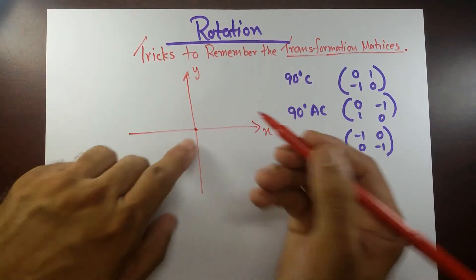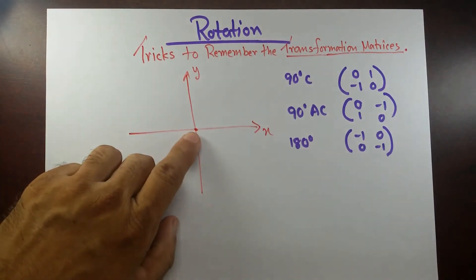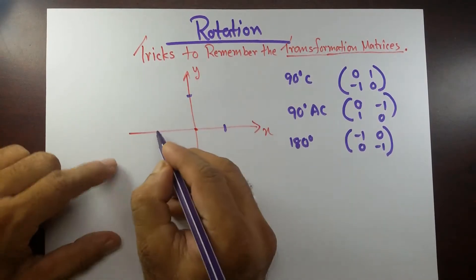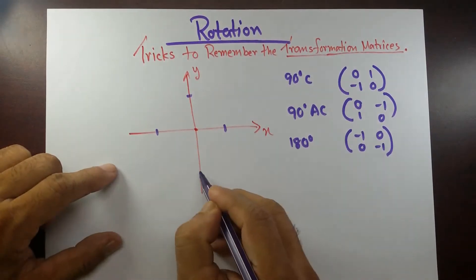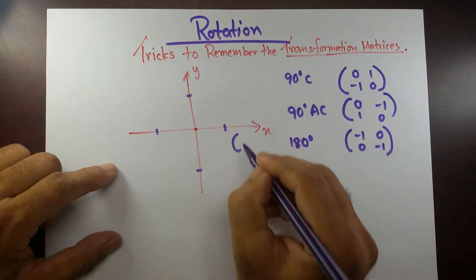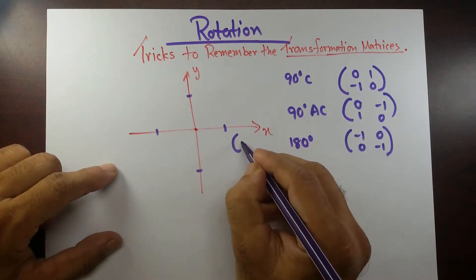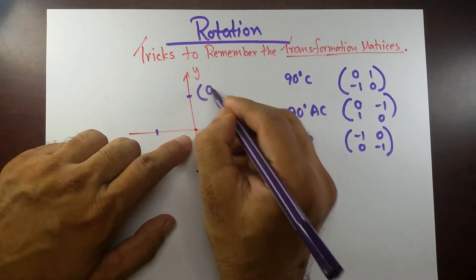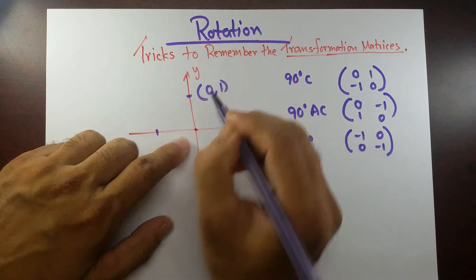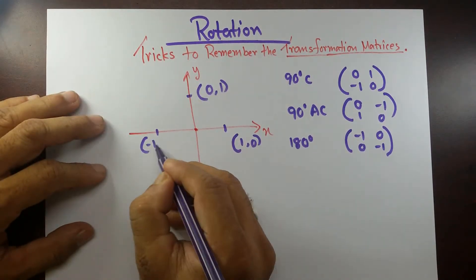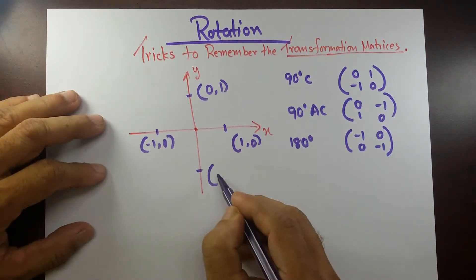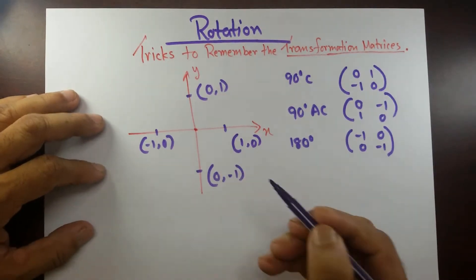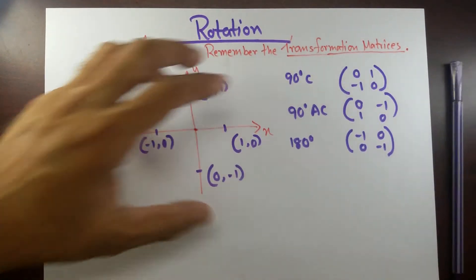You know this point is the origin. From the origin, find out the coordinates of the unit points. Going right is 1, 0. Going up is 0, 1. Going left is minus 1, 0. And going down is 0, minus 1. I think you can remember this.